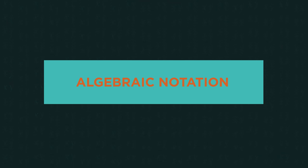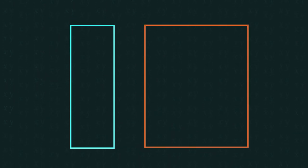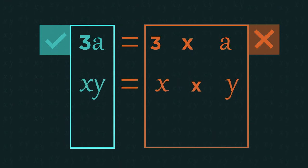In the algebraic notation video, we discovered that we always use a curly x for the letter. We don't really use a multiplication sign, so this means 3 multiplied by a, and x multiplied by y. And instead of using the division sign, we use fractions.